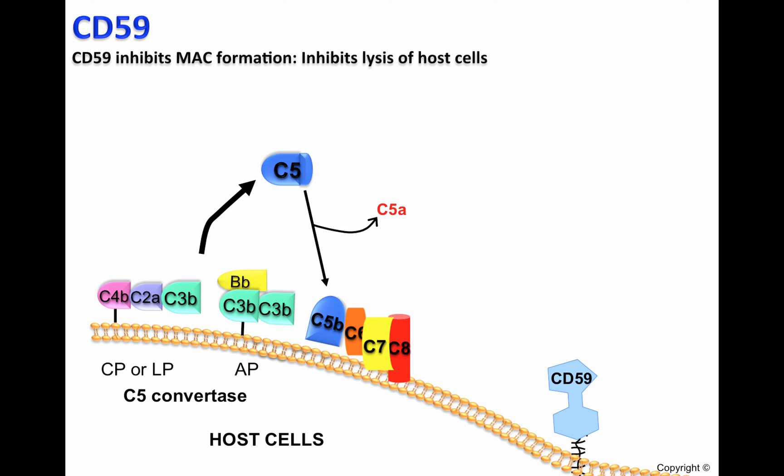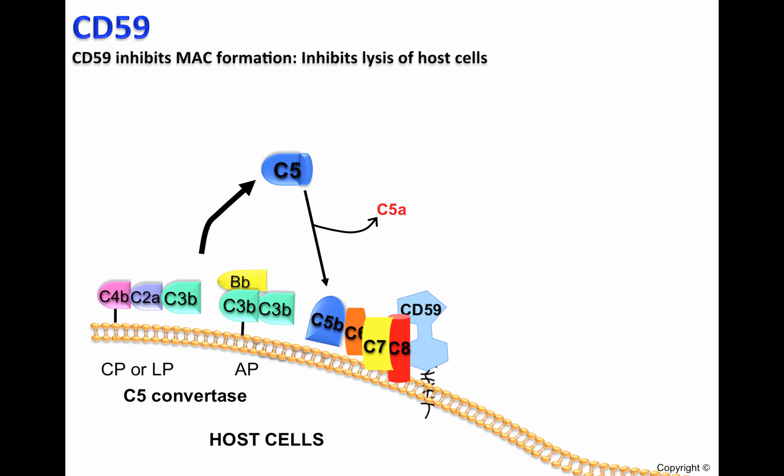Luckily, host cells express CD59, a membrane-bound complement regulatory protein. CD59 will recognize C8 and will stop the polymerization of C9. This way, CD59 is inhibiting the formation of MAC, or C5b-C9, and therefore inhibits the lysis of host cells and protects host cells from complement-mediated attack.